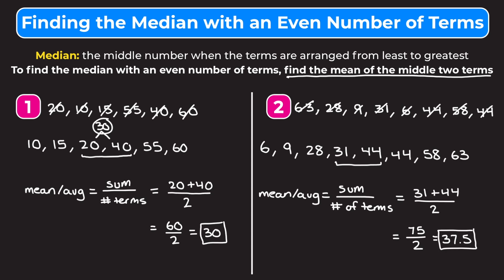Hopefully this video helped you guys understand how to find the median with an even number of terms. You just have to remember to first line the terms up from least to greatest, and then you want to find the mean or the average of the middle two terms.